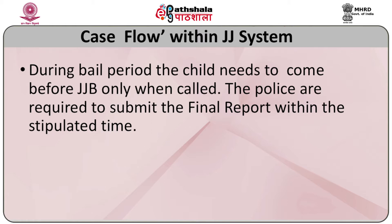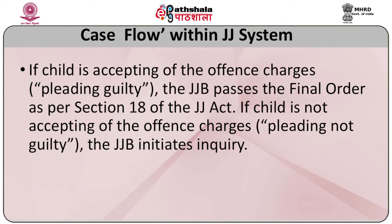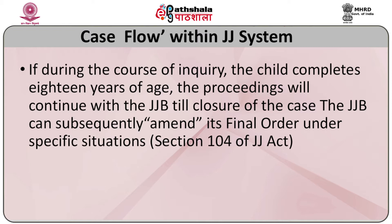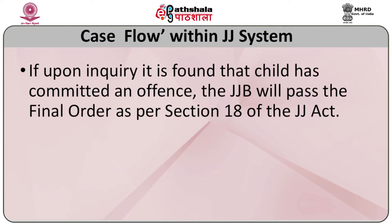The police start their investigation. If they find that no offence charge is made out against the child, they can file a discharge application. However, if offence charges are made out, the police submit the final report or charge sheet. The child is called before the Juvenile Justice Board. If the child accepts the offence charges, the board passes the final order as per Section 18 of the Juvenile Justice Act 2015. If the child does not accept, the process of inquiry starts. If no evidence is found, the child is acquitted; if evidence is found, the board passes the final order as per Section 18.